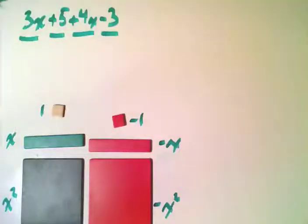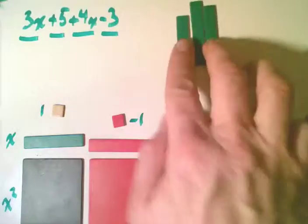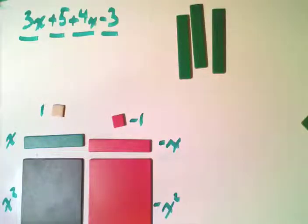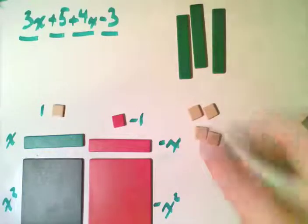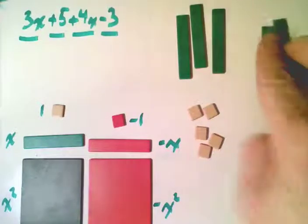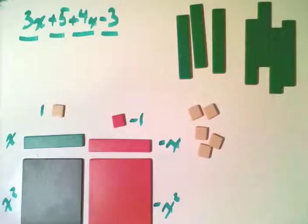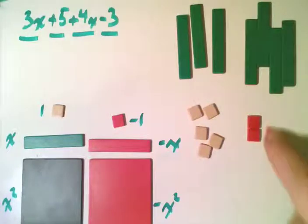Okay, and so when you're simplifying something without brackets, you're just looking at each of the terms separately, and we have four terms here. We have got a 3x term, and so we bring in 3x in tiles. We've got a positive 5 term, and so we bring positive 5 tiles in. And we've got a 4x, so we bring in 4x tiles. And we have a negative 3, so we bring in negative 3 tiles.